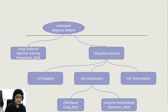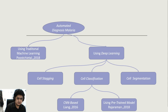In the last decade, machine learning techniques have grown rapidly, in particular deep learning. Therefore, we will be able to build an automation process which can identify the disease quickly. In general, the automation process for malaria diagnosis is divided into several parts, including cell staging, cell segmentation, and cell classification.